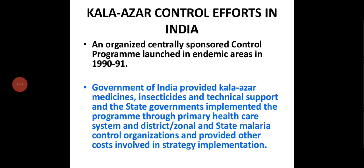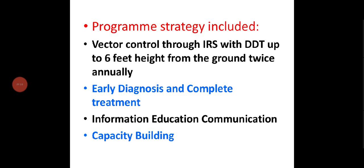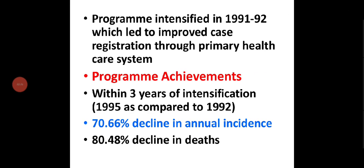The control strategy included vector control through Indoor Residual Spraying (IRS) with DDT up to six feet height from the ground, done twice annually. It also included early diagnosis and complete treatment, information-education-communication, health education, capacity building, and manpower training. The program was intensified in 1991–92, leading to improved case registration through the primary health care system.